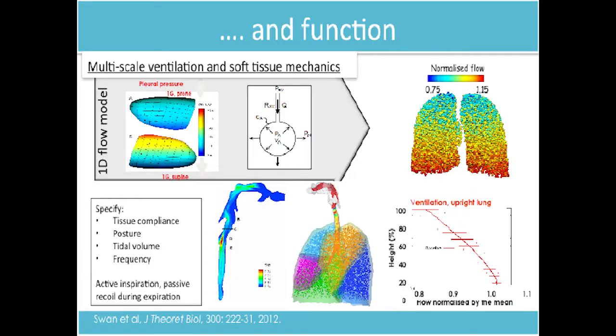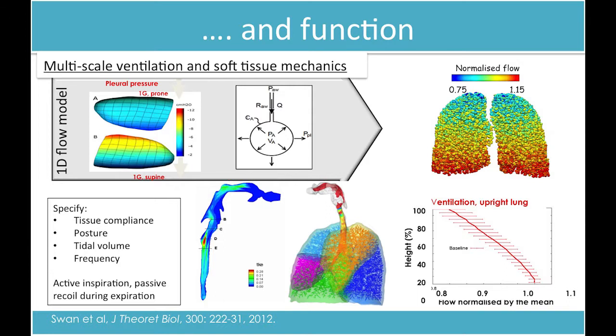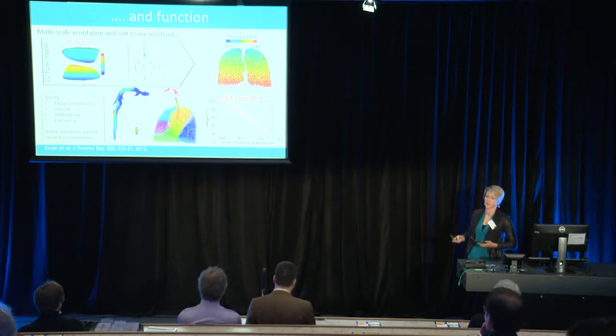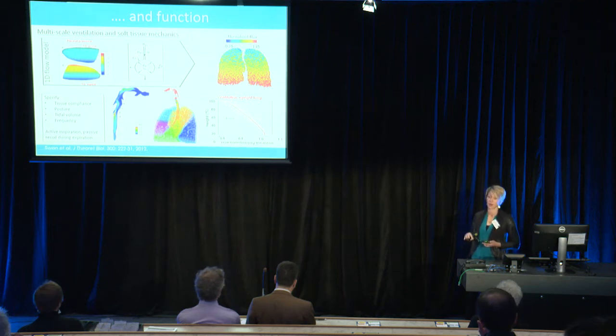Once we have structure, we then want to think about function. In the lung, as in any biological organ, structure and function are intimately related to each other. When we have lung disease, we typically get a change to structure which affects function. We've developed methods to simulate how the lung tissue deforms under gravity, linking that to simulations of ventilation distribution. When you breathe in, the air doesn't go uniformly everywhere — it depends on your posture, whether you're upright, lying on your back, or lying on your stomach. The air distribution is different, and as you age, there are further significant differences.